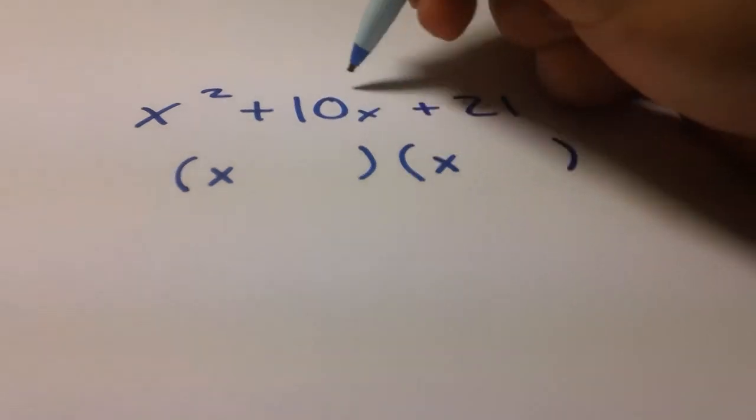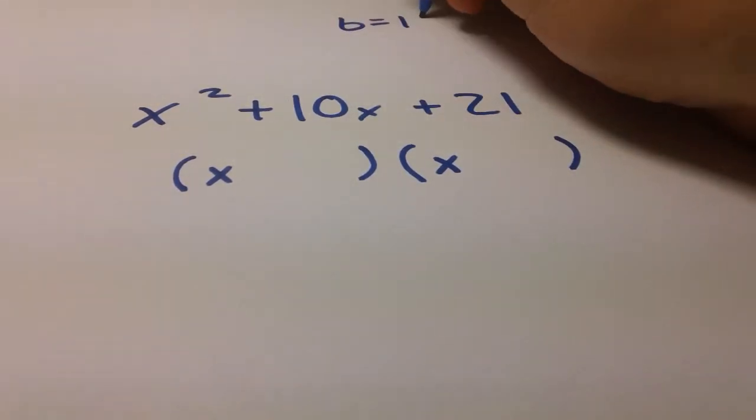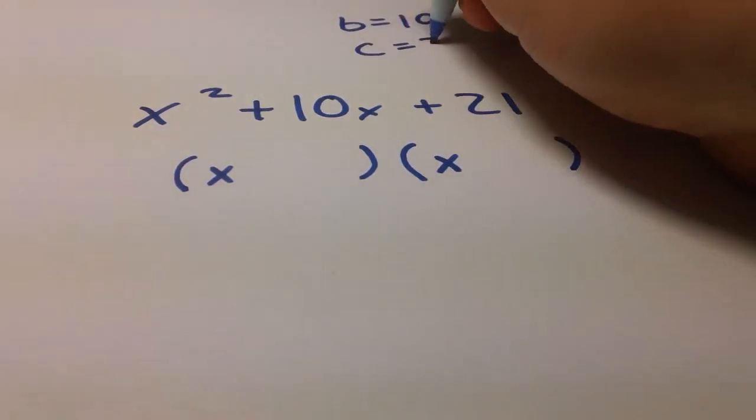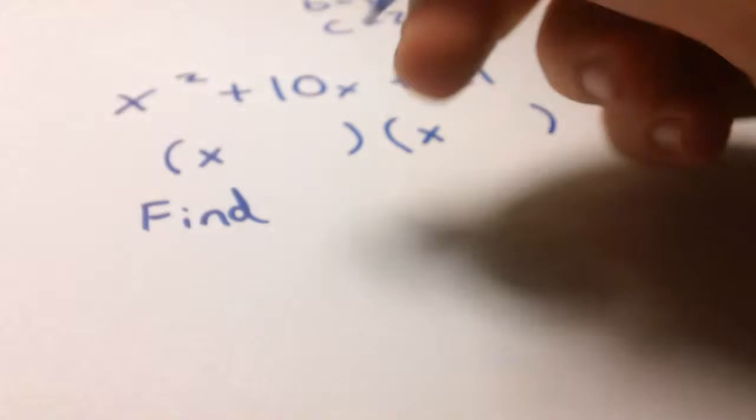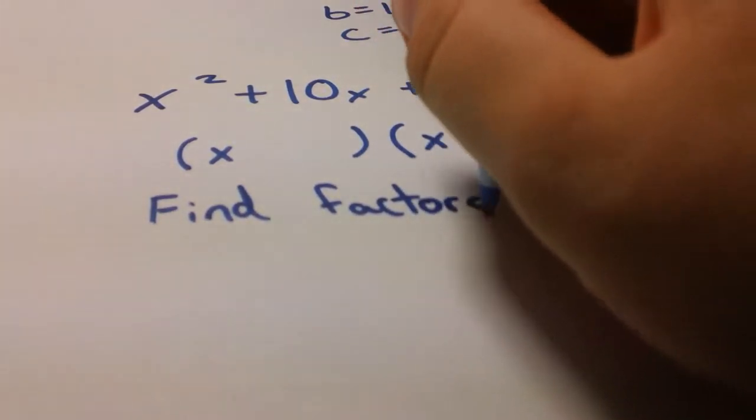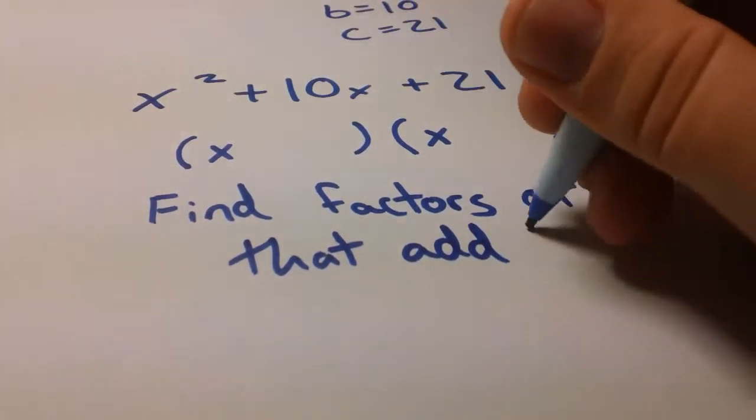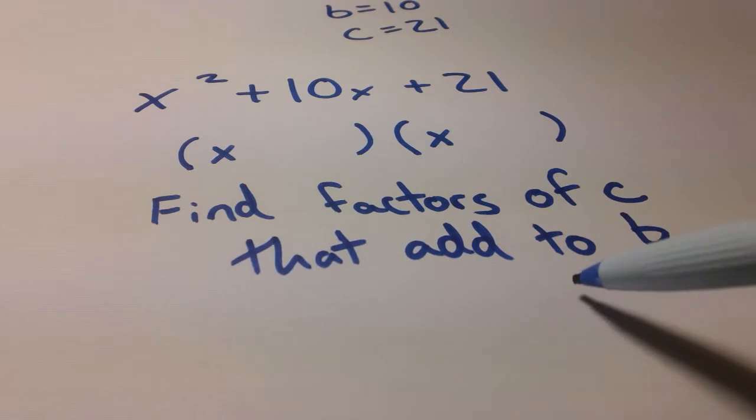What we're going to do is we have this middle term, b, and b is equal to 10. And we have this last term, c, and c is equal to 21. What we need to do is find factors of c that add to b or whose sum is b.